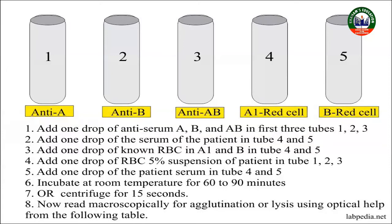For spot 2 with antiserum B: if there is no clamping, then antigen B is absent. For spot 3, antiserum D was used. If clamping occurs, that means antigen D is present; if no clamping, that means antigen D is absent. This gives the complete examination result for blood grouping.